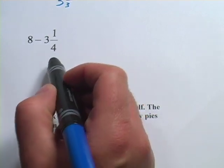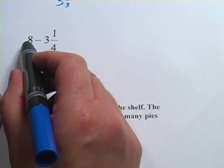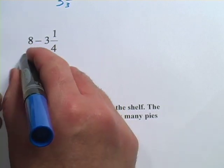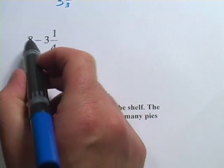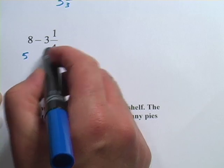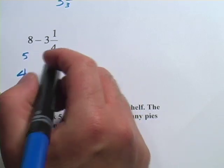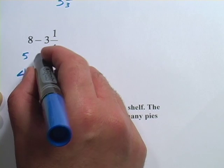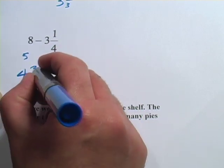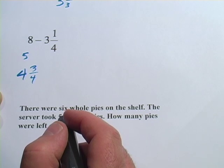8 minus 3 and 1 fourth. To do this in my head, I'm going to do the 8 minus 3 first — that would give me 5. And then 5 minus 1 fourth, well, it's going to be 4 and something. So I'll put the 4 down here, and that leaves 1 minus 1 fourth. Well, 1 minus 1 fourth is going to be 3 fourths, and I get 4 and 3 fourths.